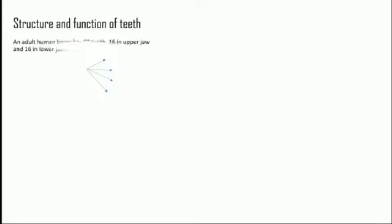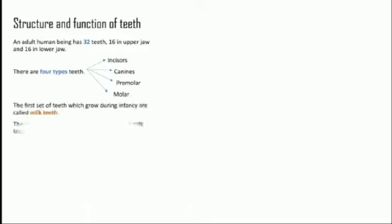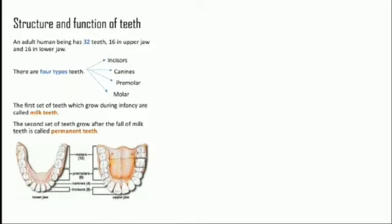Now let us come to the structure and function of the teeth. A human being has 32 teeth — 16 in the upper and 16 in the lower jaw. The four types of teeth present in humans are incisors, canines, premolars, and molars. The first set of teeth which grows during infancy is called milk teeth. The second set that grows after the milk teeth fall is known as permanent teeth. In the picture you can see the upper and lower jaw and the placement of the four sets of teeth.